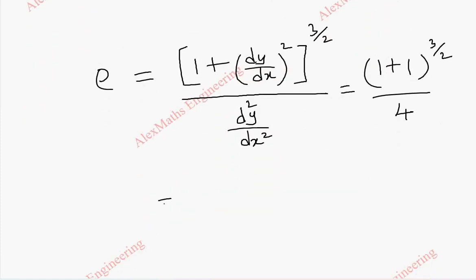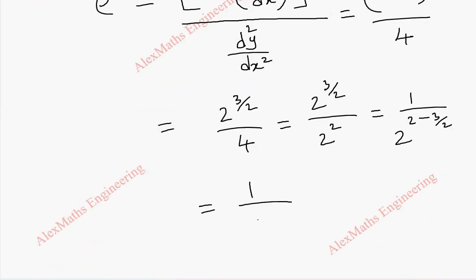So, totally this is 2 power 3 by 2 divided by 4. And when I bring this down, this is 2 power 3 by 2 by 2 square equals 2 power 3 by 2 minus 2. So, 2 to the power 1 by 2 which is root 2.